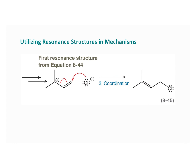Notice that the choice of resonance structure will impact the curved arrow notation for the subsequent elementary step. In equation 844, a single curved arrow was used to depict the final coordination, but if you use the other resonance structure, you'd need two curved arrows — either would be correct. Thank you for sticking with me — this was a really long screencast. We'll do some problems in class and work on this, and then the next chapter we'll dig into making decisions between when we would expect an SN2 versus an E2 reaction and those types of things.